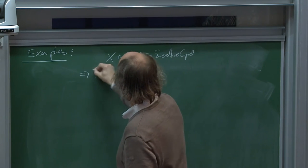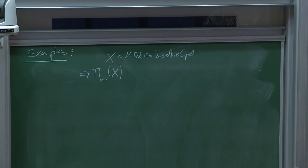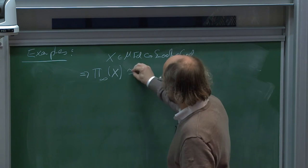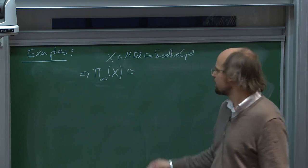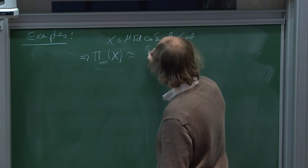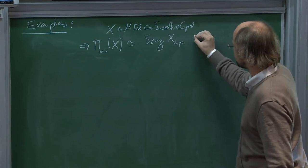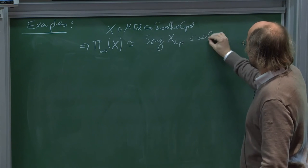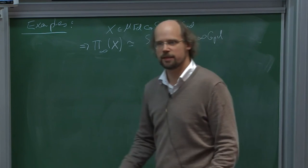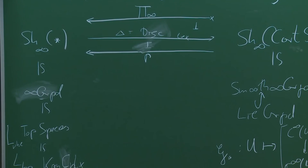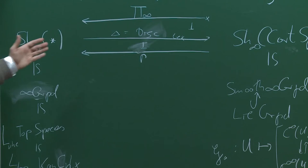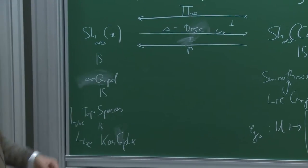Here's the first example: if X is a smooth manifold regarded in smooth infinity groupoids, then π∞(X) — this was proven by Dave Carchedi, and works also for Fréchet infinite-dimensional manifolds — produces the fundamental infinity groupoid of X, the singular simplicial complex of the underlying topological space, regarded as representing the Kan complex and Hansen infinity groupoid. This is why it's called π∞: it's the étale homotopy type functor, sending a scheme (in our case manifolds) to its homotopy type. The adjunction gives a synthetic version of Galois theory relating locally constant stacks to homotopy types.